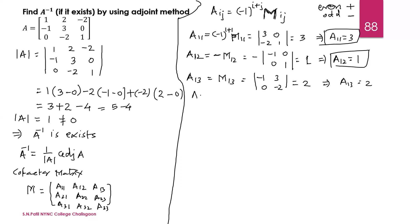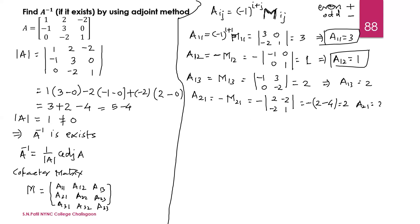Now the second row: A21. The sign is minus, so we write minus M21. The element is minus 1; deleting its row and column gives the submatrix 2, minus 2 and minus 2, 1. The determinant is 2 into 1 minus minus 2 into minus 2, which is 2 minus 4, giving minus 2. With the minus sign outside, A21 equals 2.